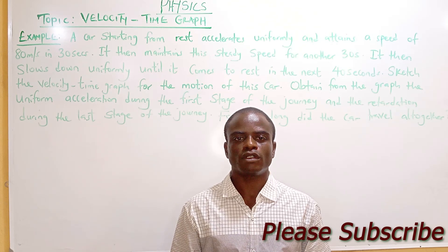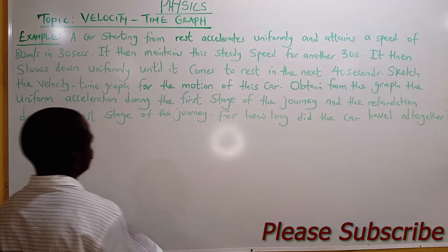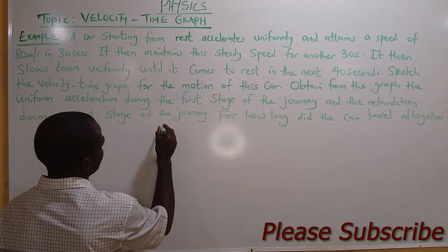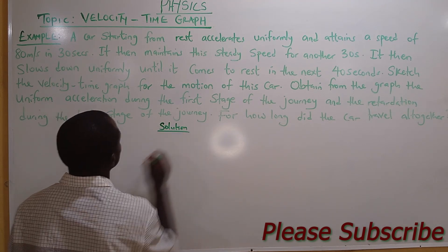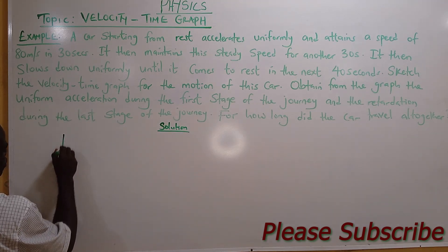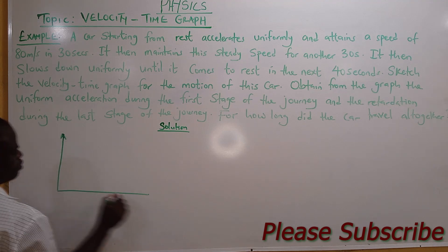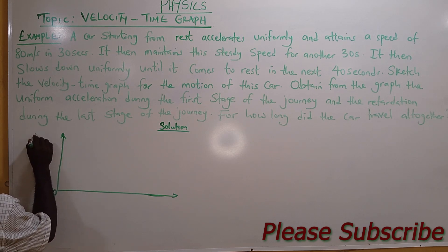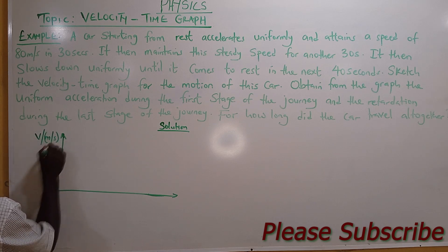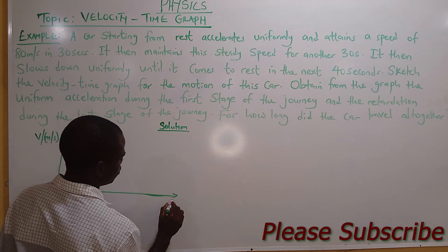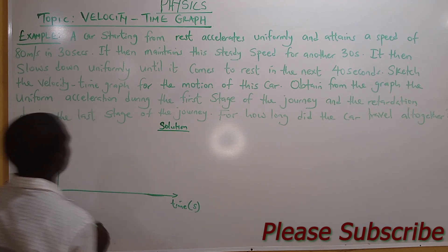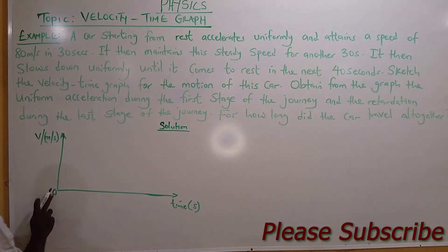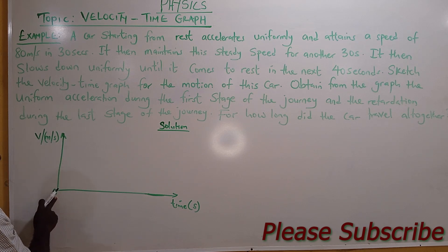The first thing to do is to draw the diagram for the velocity-time graph of motion. The vertical axis is velocity in meters per second, and the horizontal axis is time in seconds. A car starting from rest — put zero here — that's an indication that it's starting from rest. A zero indicates that the car starts from rest.